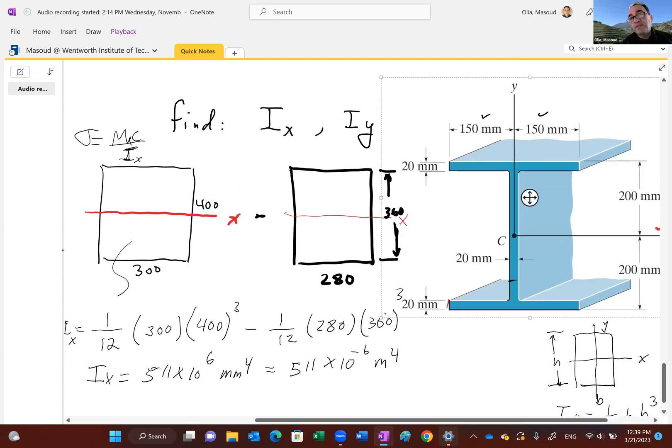So it becomes 1/12 hb³, as if you rotate the axis 90 degrees. So you see this y-axis passing, so this is called the web, right? I don't know if you're familiar with the terminology, and this is the flange of the beam. So we've got an I-beam with two flanges and one web.